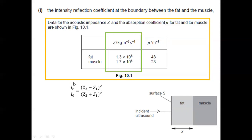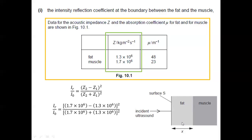Remember that I sub R pertains to the reflected intensity at the boundary, while I sub O is the initial intensity. Z2 and Z1 both pertain to the acoustic impedances of the materials. You might be wondering what's going to be Z1 and what's going to be Z2. It doesn't actually matter because after subtracting or adding, we get to square the values.